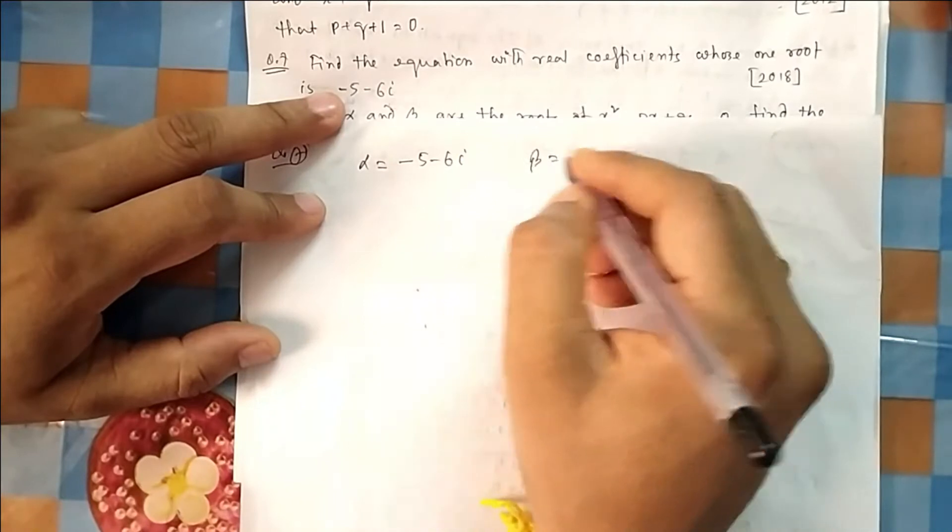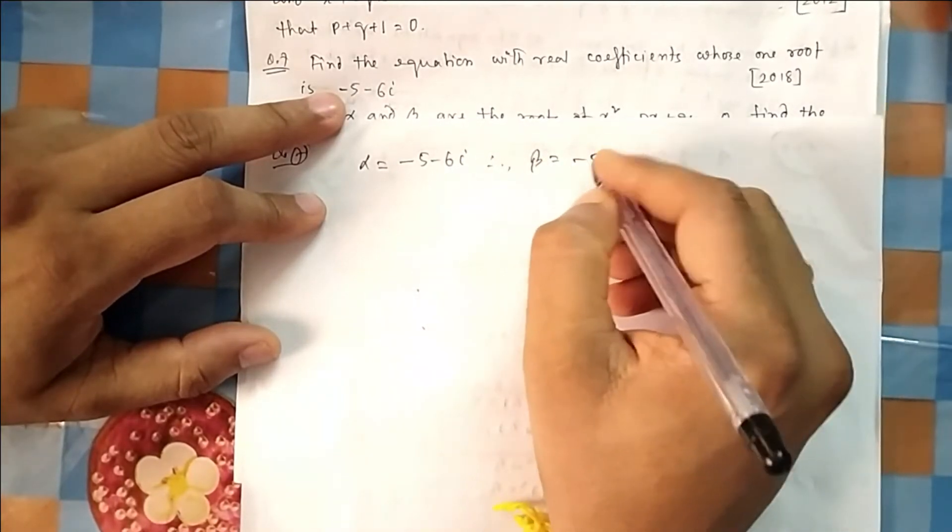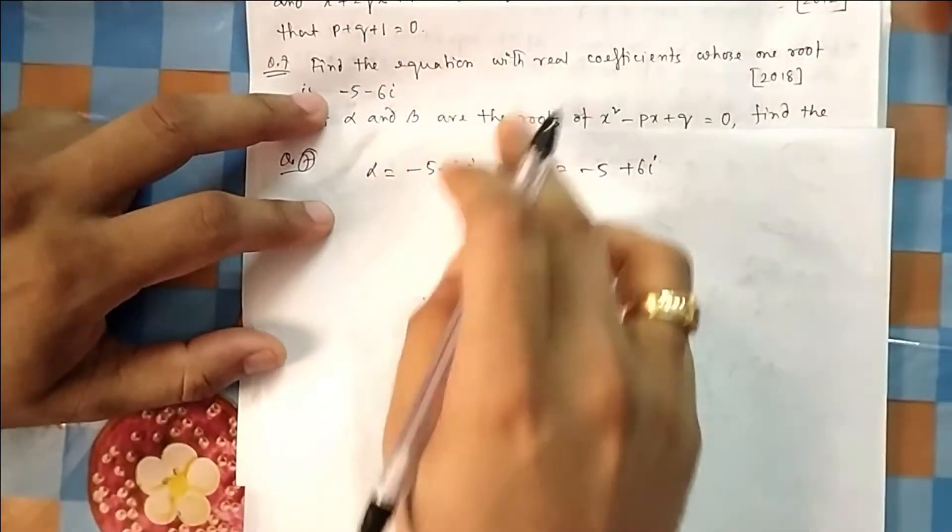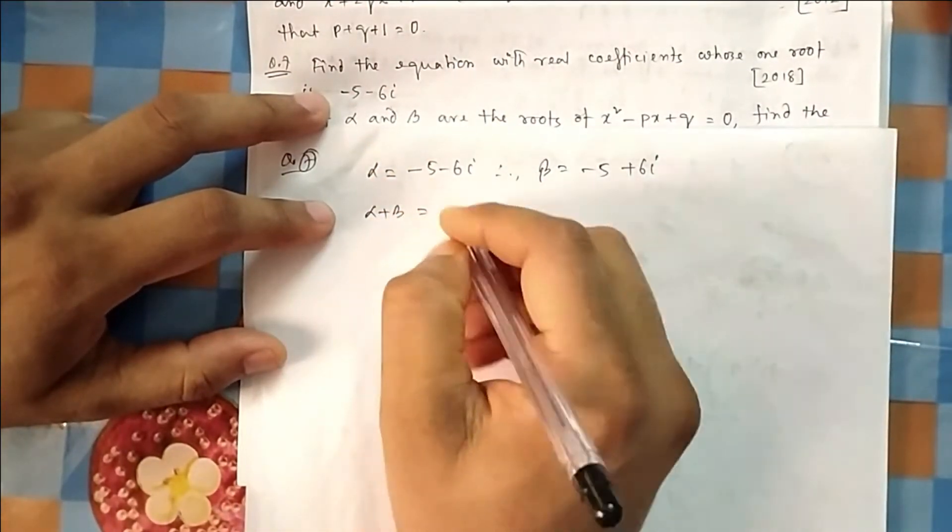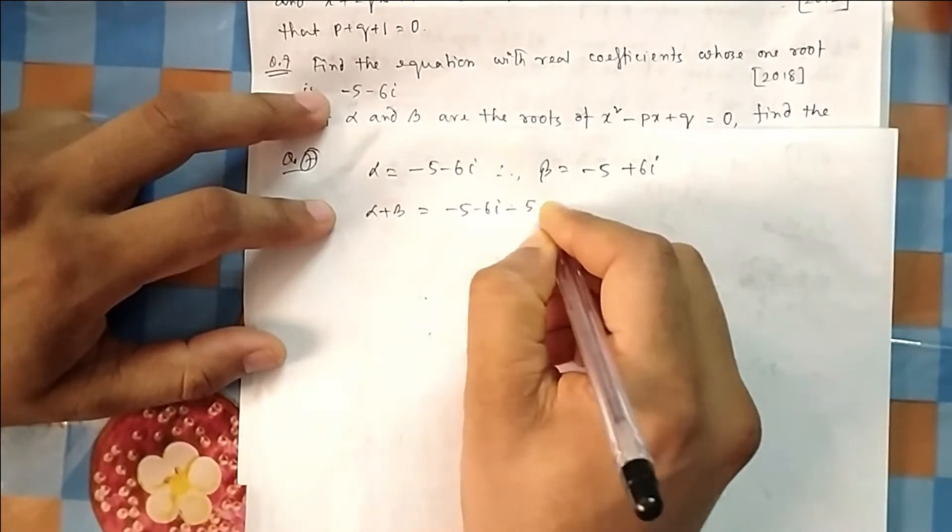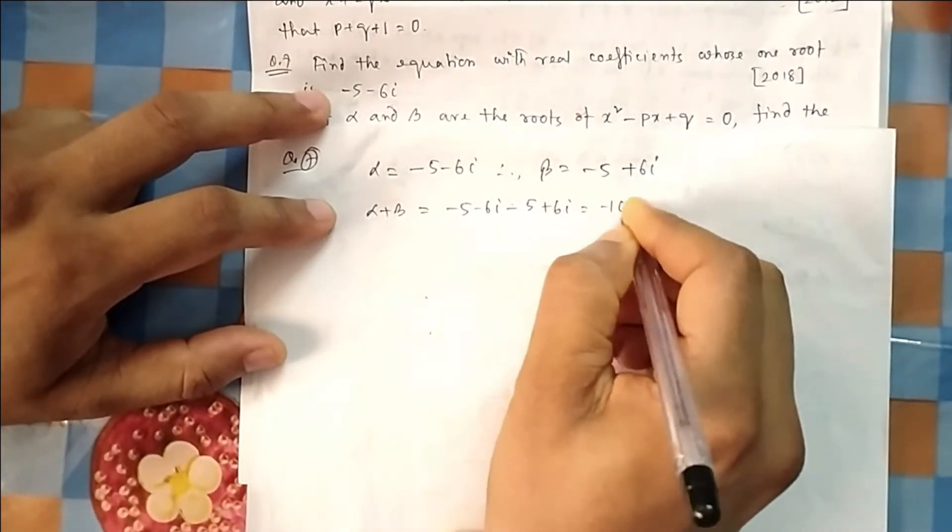So because one root is there, therefore α, therefore β will be equal to this one. Now for the equation we need the sum of the roots and product of the roots. So if you take sum of these two, then 6i and -6i would get cancelled, you will get -10.